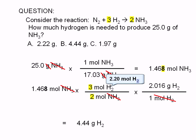Note that we keep 3 significant digits in our answer, since the least precise term in our calculation, 1.468, has only 3 significant digits. The numbers 3, 2, and 1 in the conversion factors are exact, while the molar mass of hydrogen, 2.016, has 4 significant digits. Therefore, the correct answer is choice B.